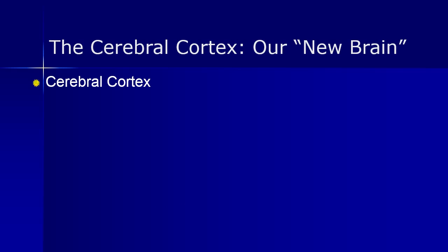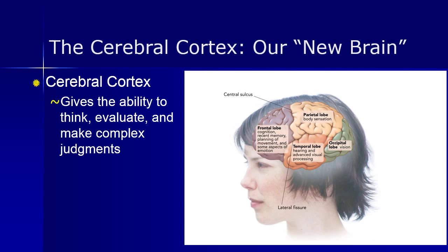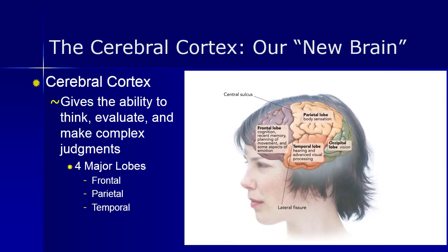The cerebral cortex is part of the new brain that gives humans the capacity for higher thought, language, self-reflection, human consciousness, reasoning, evaluating, making judgments, and imagination. There are four major lobes: the frontal, parietal, temporal, and occipital. The frontal lobe is associated with reasoning, motor skills, higher-level thinking, and expressive language — damage here can increase risk-taking behavior and poor decision-making. The parietal lobe is associated with processing sensory information like pressure, touch, and pain. The temporal lobe is associated with interpreting sounds and language, and since the hippocampus is located there, damage can cause memory problems. The occipital lobe is associated with interpreting visual information, and damage can cause difficulty recognizing objects and words.